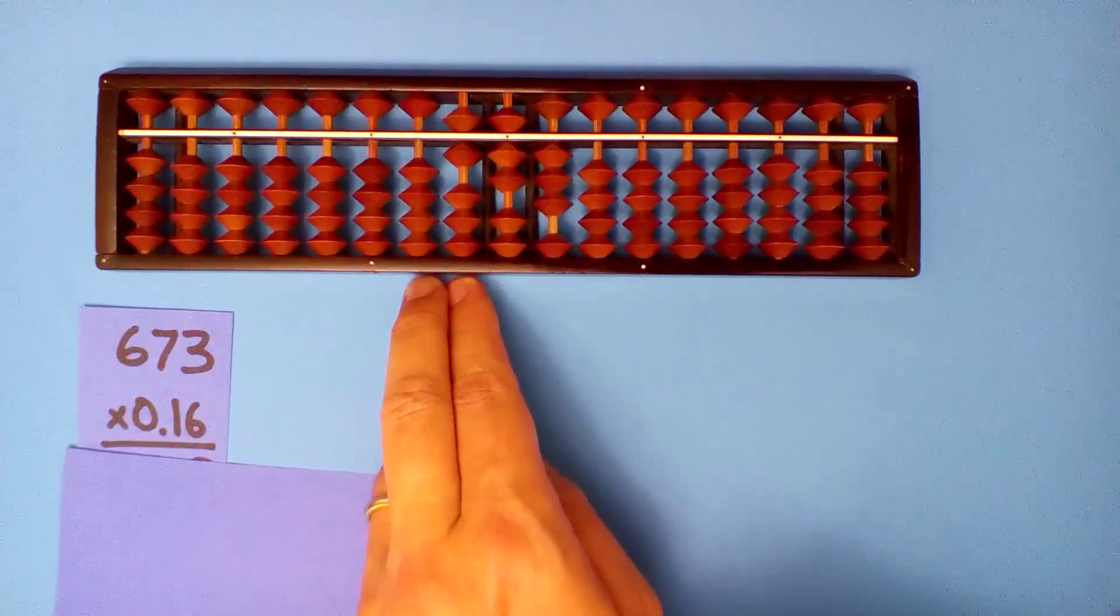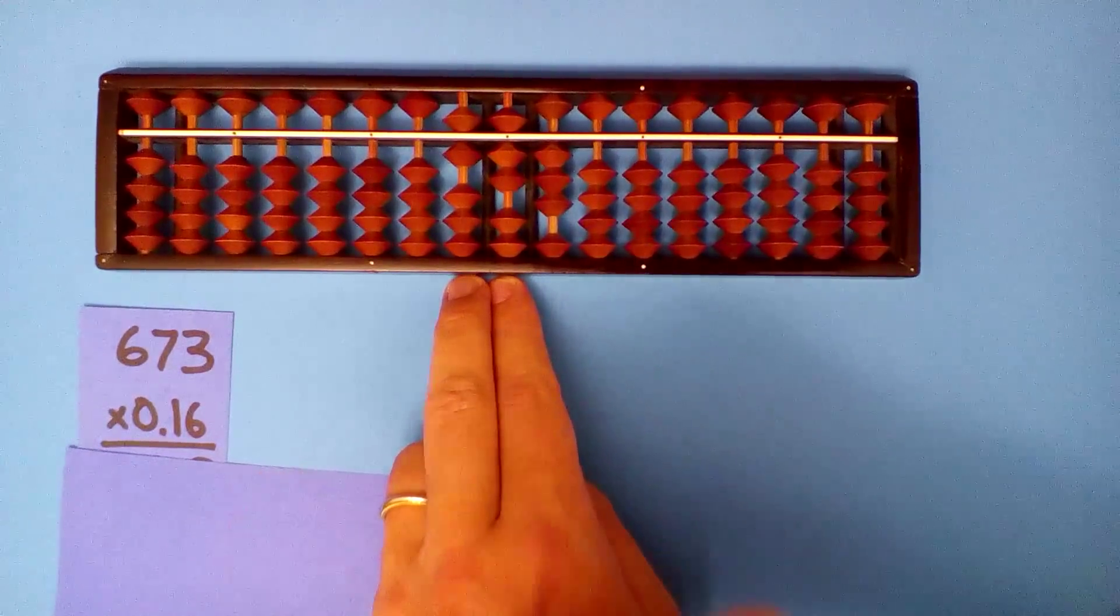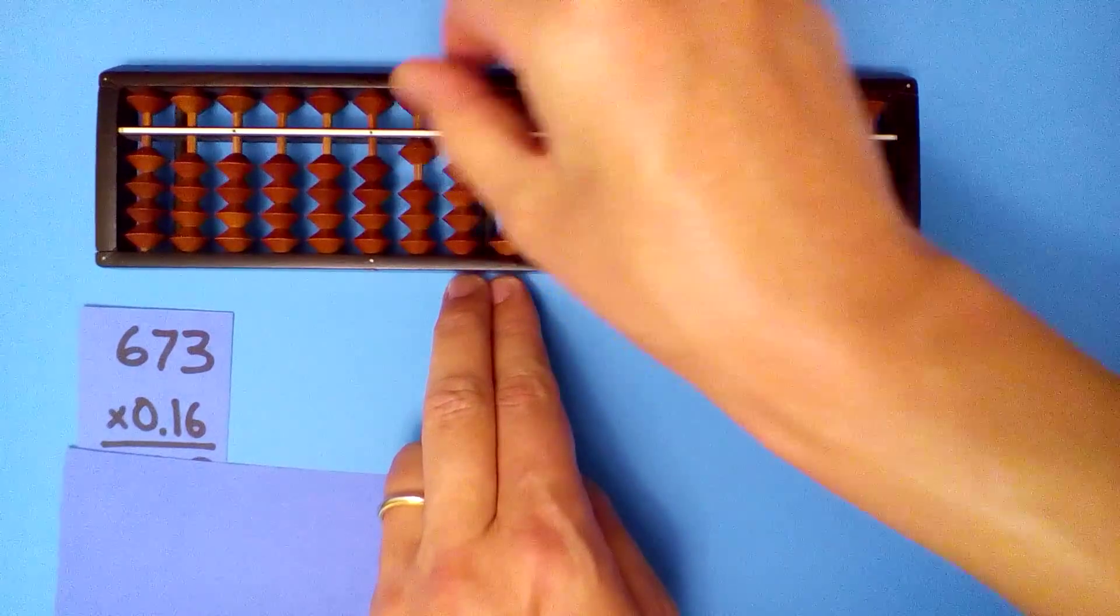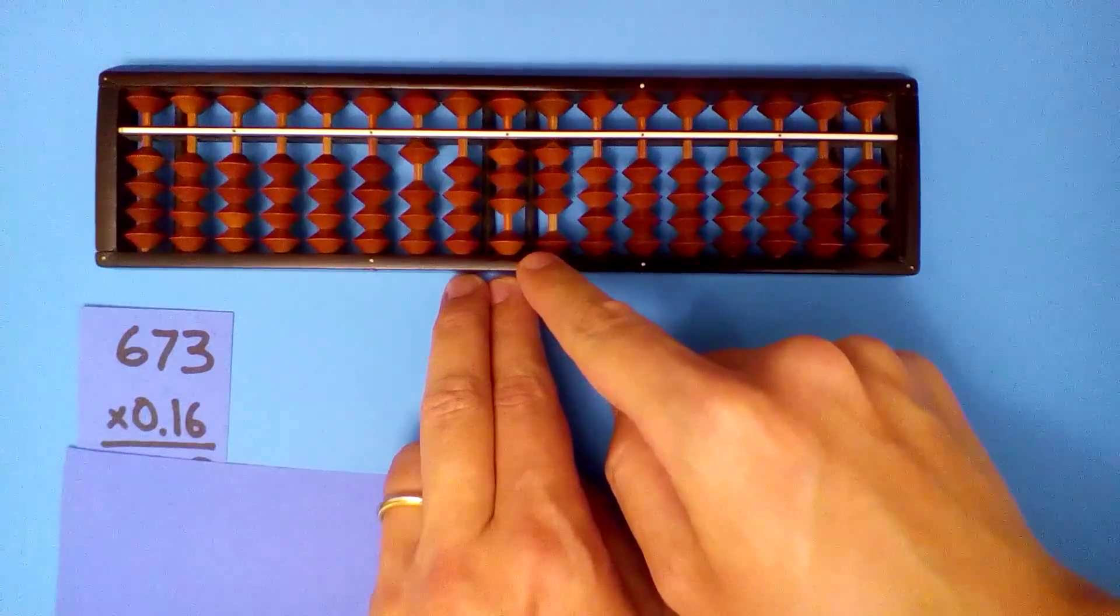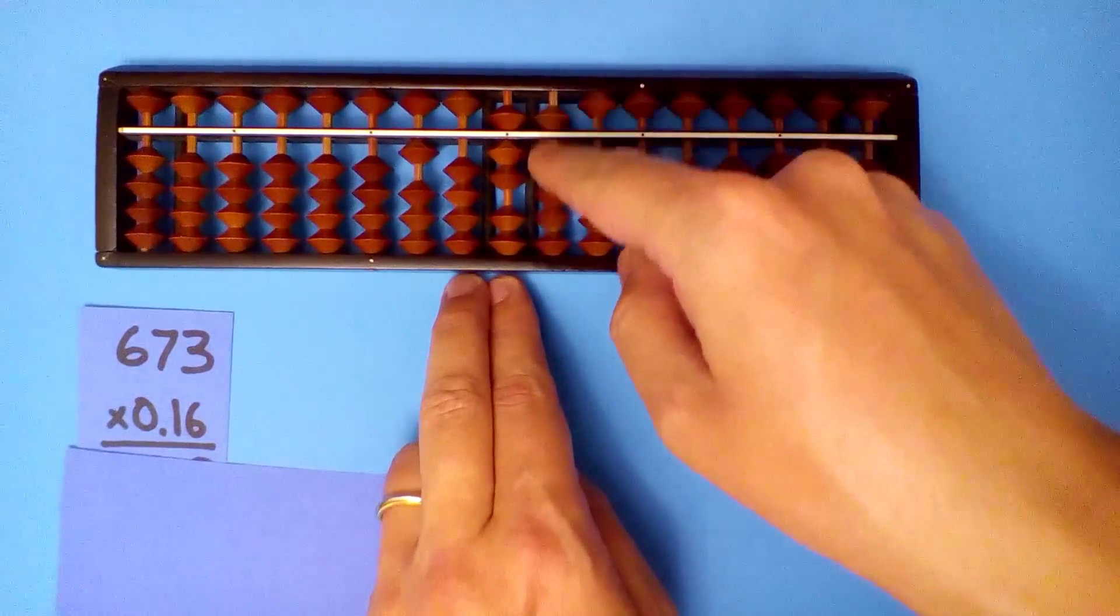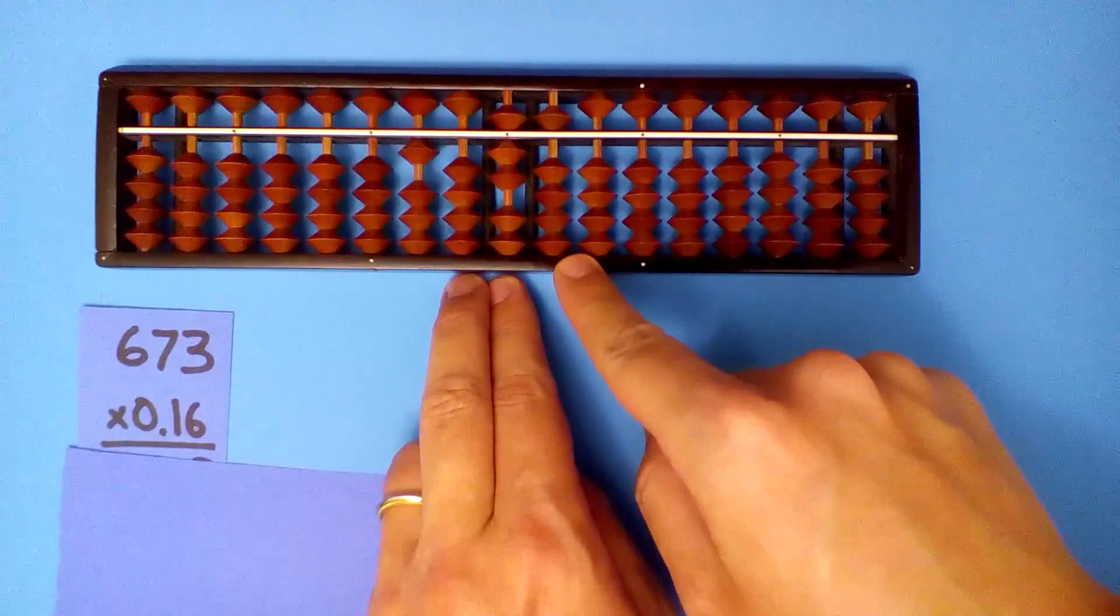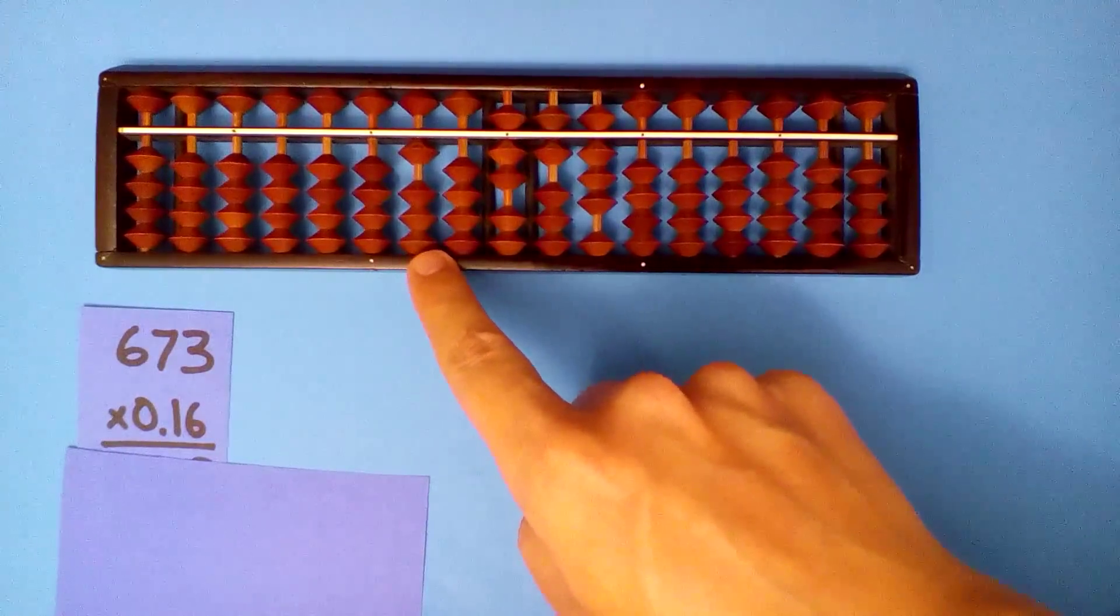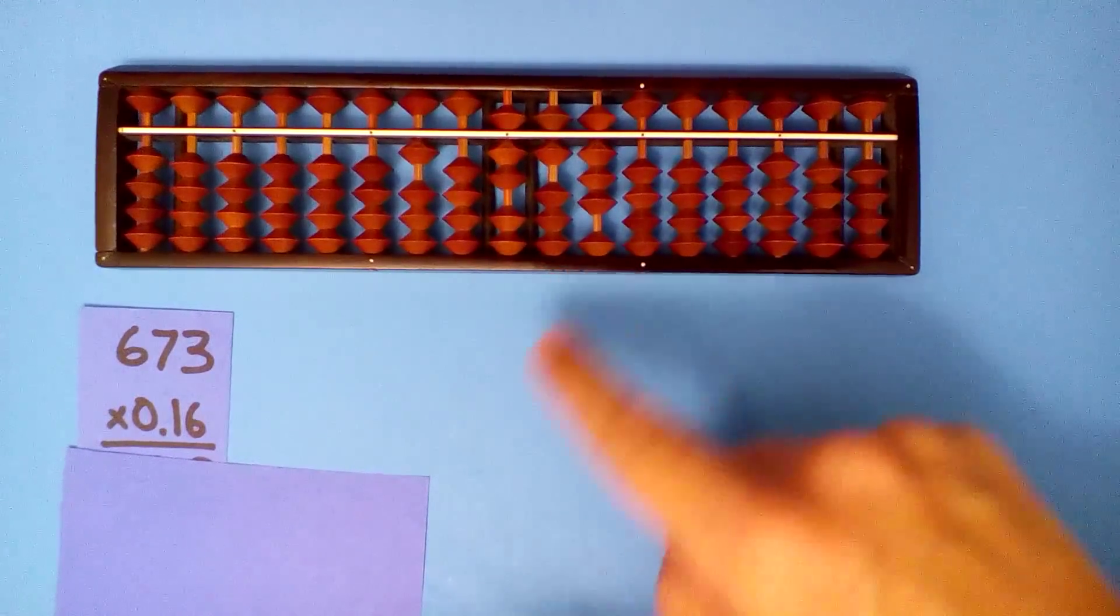Go one space to the right and use our six. Six times six, thirty-six. Six times seven, forty-two. Six times three, eighteen. Our answer 107.68.